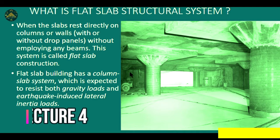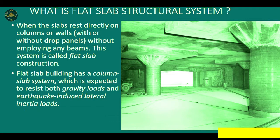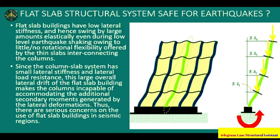A flat slab structural system is one where the slab rests directly on the column or wall, with or without a drop panel. There are no beams present. When the slab rests directly on the columns, this is called a flat slab system — it is a column-slab system, not a beam-slab system, and it can resist both gravity loads and earthquake-induced lateral inertia loads.